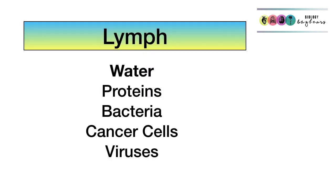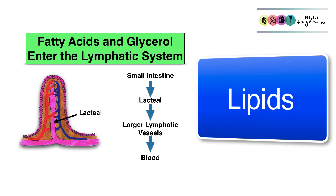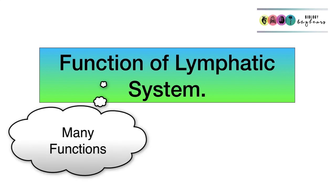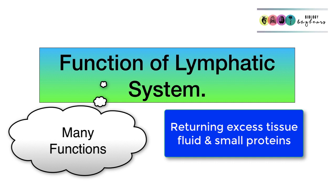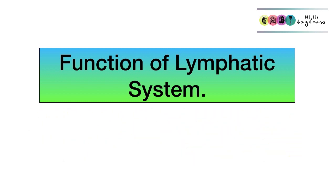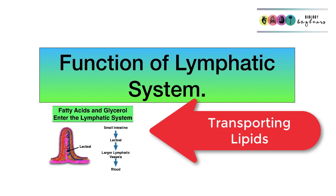Make sure you know what's in lymph: it's mostly water, it contains some proteins, and it can contain bacteria, viruses, and cancer cells. Also be mindful that lymph contains a lot of fat or lipids, because of the lacteals — the lymphatic capillaries found in the intestines. The lymphatic system has several functions: returning excess tissue fluid and proteins to the blood, a defence role through filtering in lymph nodes, and absorbing the products of fat digestion via the lacteals.